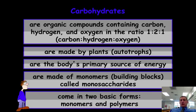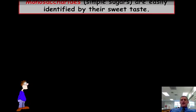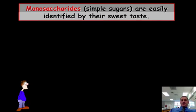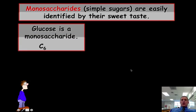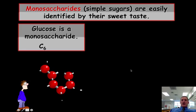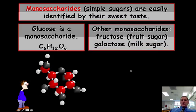Come in two basic forms. You've got the monomers, which are just the basics, and then the polymers, which are many. So monosaccharides are called simple sugars. They're easily identified by their sweet taste. Glucose is the main monosaccharide we're going to study. It is C6H12O6. You reduce that down, you have the same CH2O formula that we've been talking about.